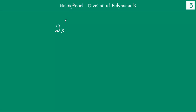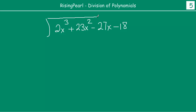Before we wrap up, let's take one more example. This time let's write P(x), which is our dividend, as 2x cubed plus 23x squared minus 27x minus 18. This is our P(x), already written in standardized form. We divide this by Q(x), which is x squared plus 5x plus 10. This is an interesting example, because in the previous two examples the divisor was of degree 1, but here the divisor is of degree 2.